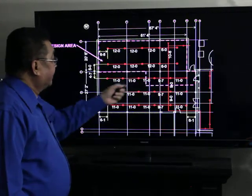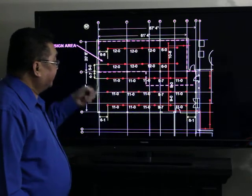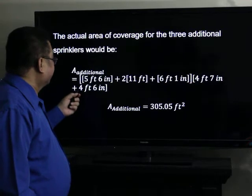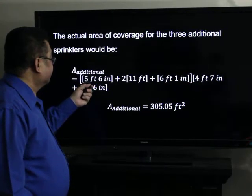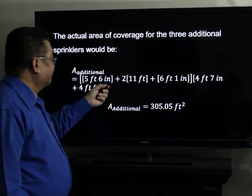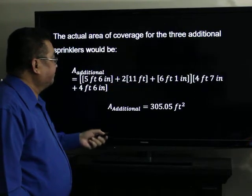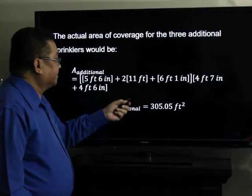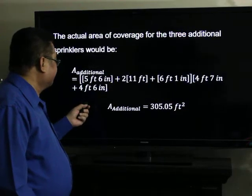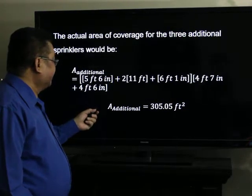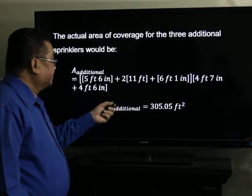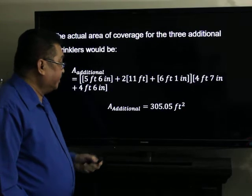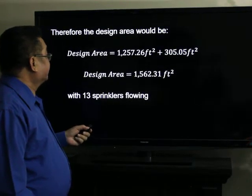We will add the three sprinklers here, and then we will recalculate the area. The actual area of coverage for the three additional sprinklers will be 5 feet 6 inches plus 2 times 11 feet, which is the spacing, and 6 feet 1 inch times 4 feet 7 inches plus 4 feet 6 inches. The additional area covered by the three additional sprinklers is 305.05 square feet.